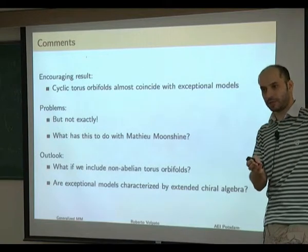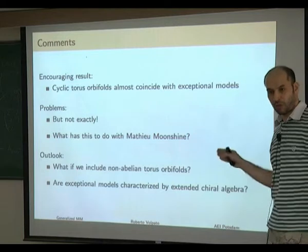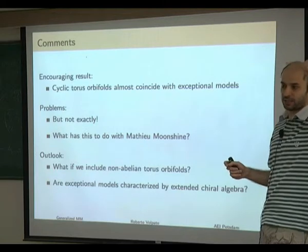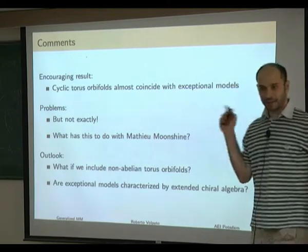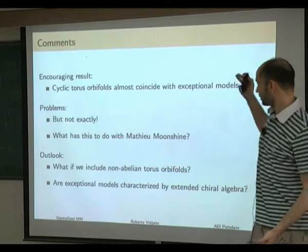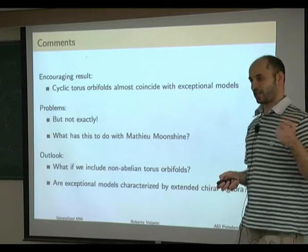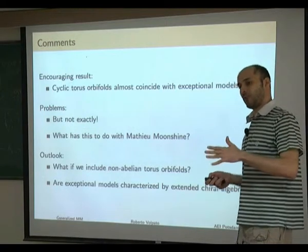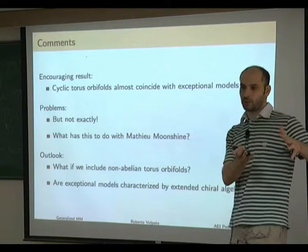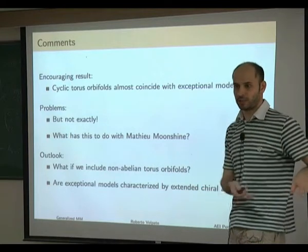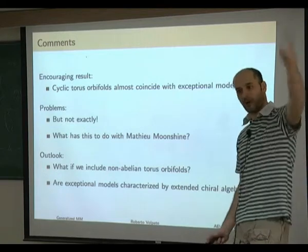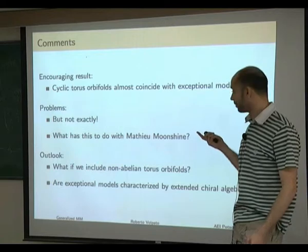These holomorphic fields are massive N=4 representations contributing with minus signs in the elliptic genus. On the other hand, from Mathieu Moonshine we know that all massive representations are positive. So one should probably try to exclude models where there are representations contributing with minus signs. If one restricts to these models and surfs the moduli space excluding the exceptional ones, maybe one can recover M24.